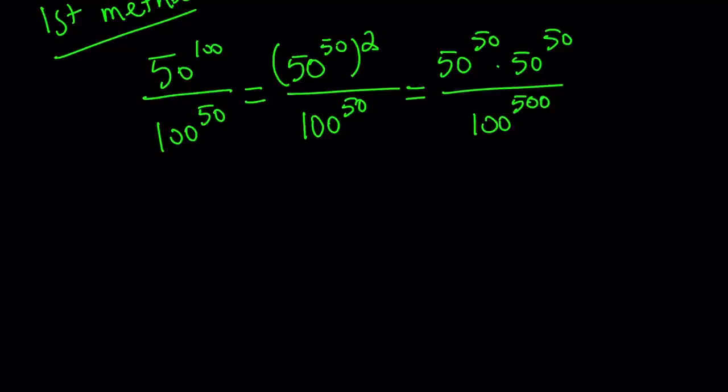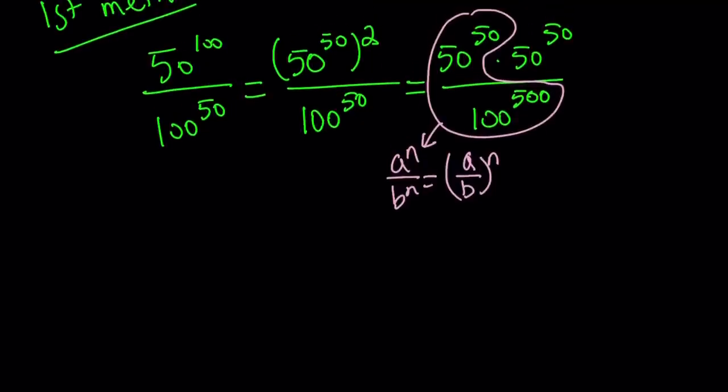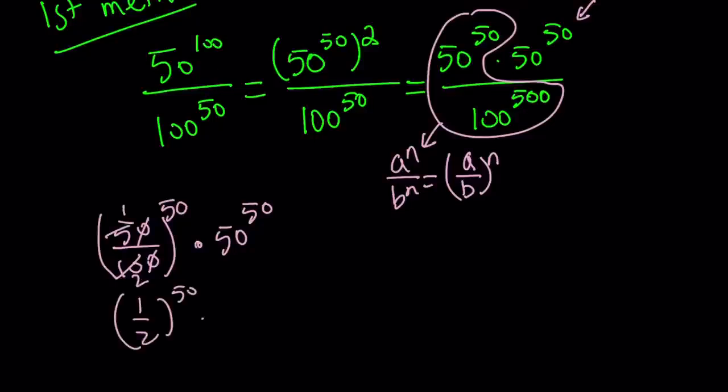Now we're going to put these two together. So separate our expression into two factors. The first factor is going to be the following. How do you simplify this? Well, we're going to use the rule a to the n divided by b to the n is a over b to the power n. Make sense? So under that rule, we can write this as 50 over 100. And then a common power of 50. Multiply by this number right here, 50 to the power 50. What do we do next? 50 goes into 102 times. Simplify, you get 1 half. So we have 1 half to the power 50 times 50 to the power 50.